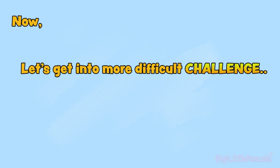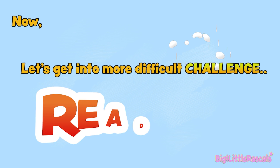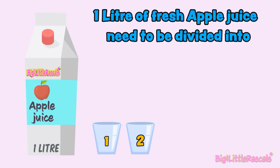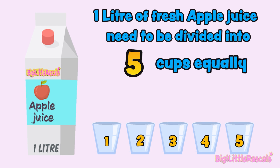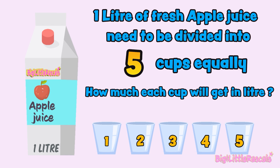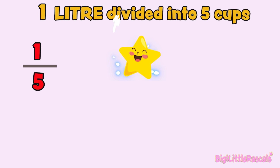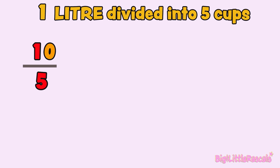Now let's get into more difficult challenges. Ready? This is 1 liter of fresh apple juice. We need to divide this into 5 cups equally. So the question is: how much will each cup get in liters? 1 liter divided into 5 cups — the fraction is represented as one-fifth. Because 1 is smaller than 5, we need to borrow 1 zero from our smiling star so it can be divided by 5. One zero borrowed.